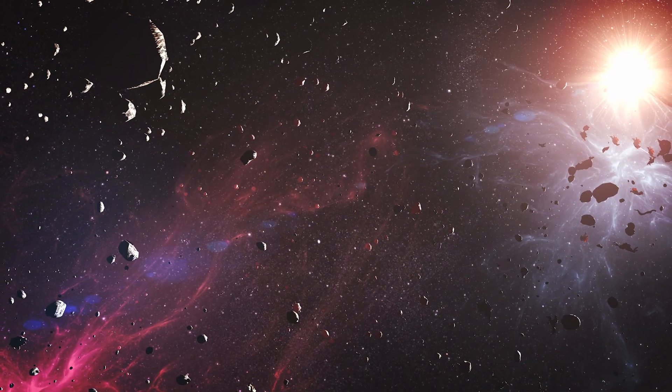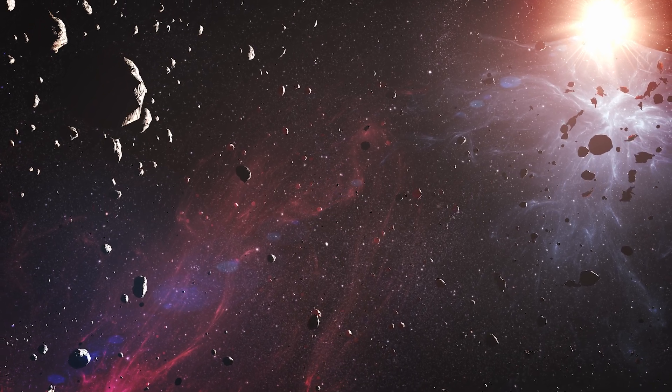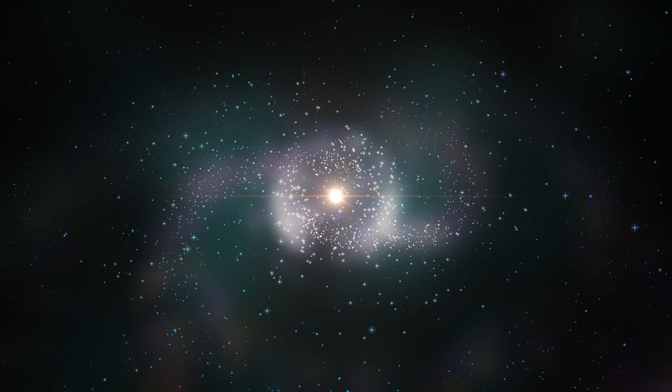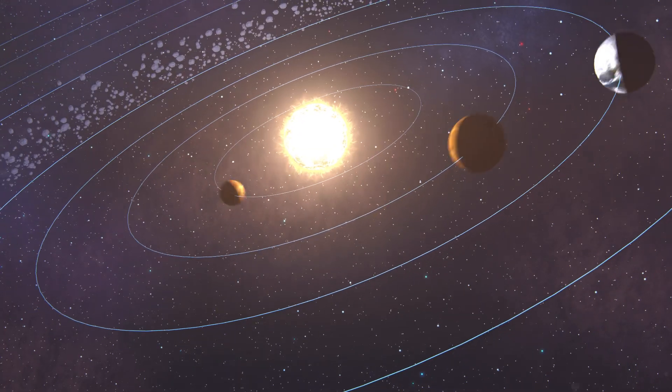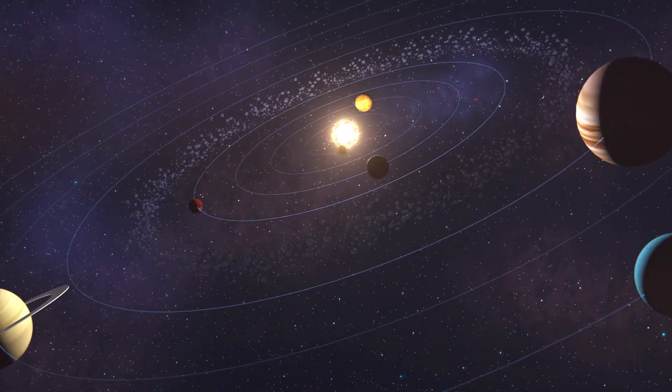These observations can tell us a lot about the composition and behavior of minor asteroids. This information is crucial for understanding the formation and evolution of our solar system. It's like getting a free sample of the early solar system delivered to our doorstep.